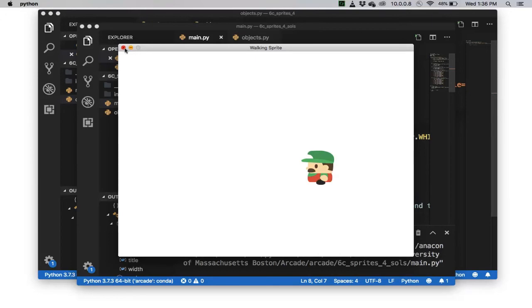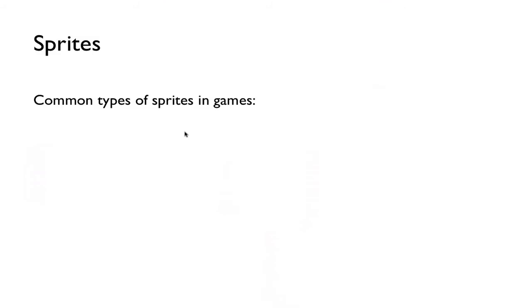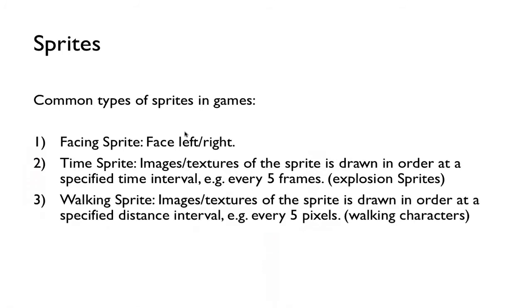So let me go through the lecture notes. In the previous video we talked about some common types of sprites — facing right, facing left sprite, and a time sprite like an explosion sprite where all textures are drawn every certain number of frames or every time interval. And then in this video we'll talk about how to create walking sprites, where characters are walking around as you saw in the demo.